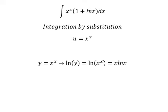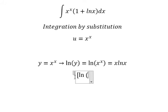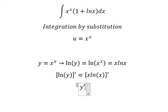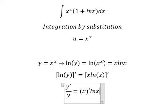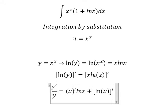Next, if we do first derivative for both sides, you will get this one into first derivative of y over y. This one we do first derivative of x, multiply by ln x. Later we do first derivative of ln x, multiply by x.